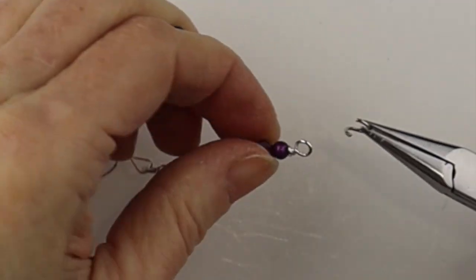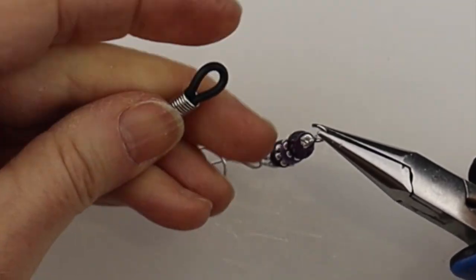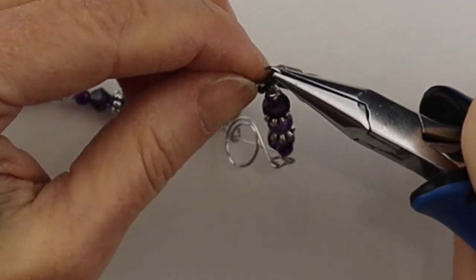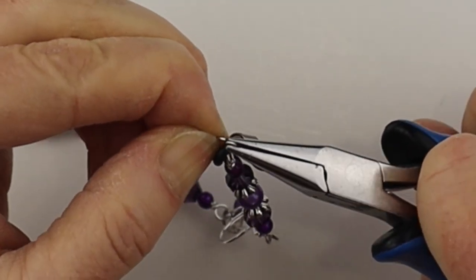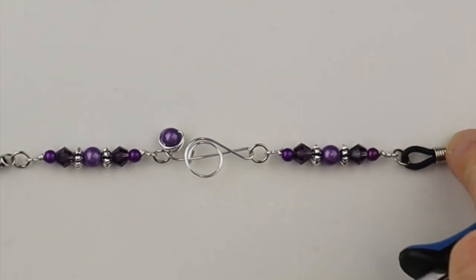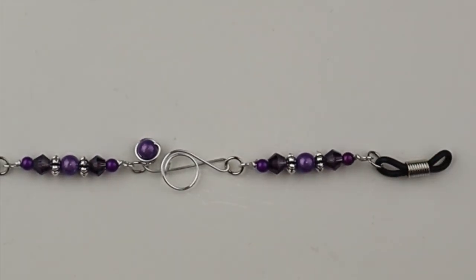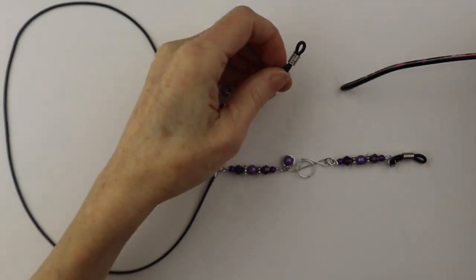So from there we're going to get our last jump ring and add the finding for the eyeglass holder. I'll link up below where you can find those rubber eyeglass connectors. So there we go. And you add them both.